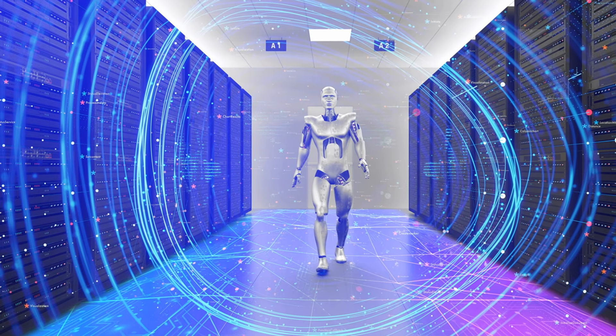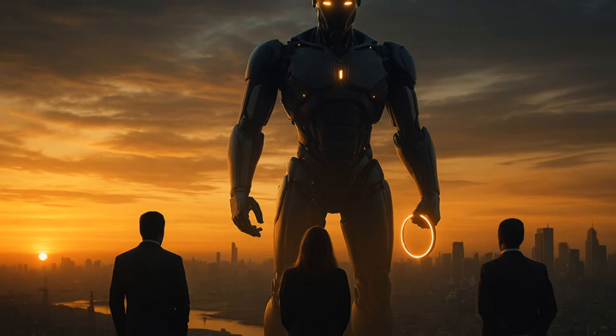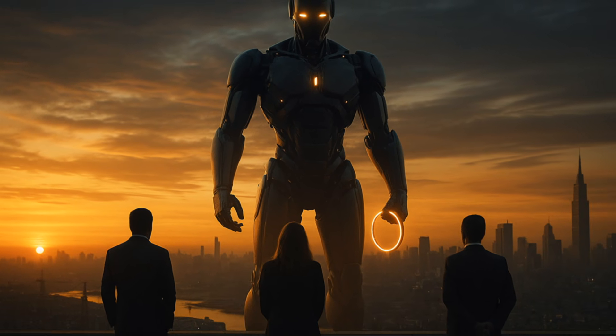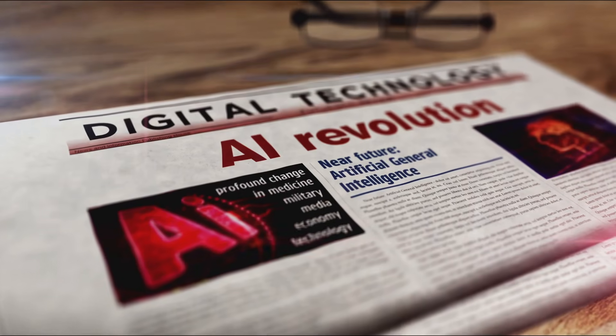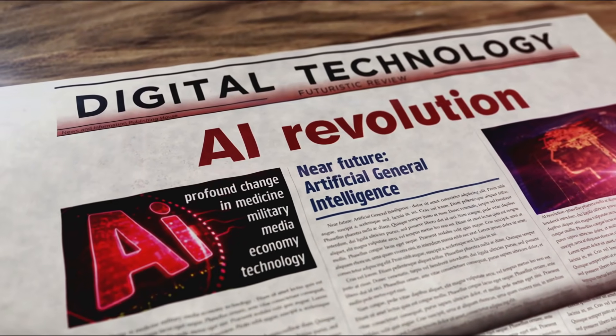So how do we navigate a future this uncertain? The answer lies in safety, ethics, and foresight. But achieving them is one of the hardest tasks humanity has ever faced. AI alignment research is attempting to solve this: embedding human values into systems that don't think like humans at all. But which values do we use? Whose ethics? And whose culture? These are questions with no simple answers.